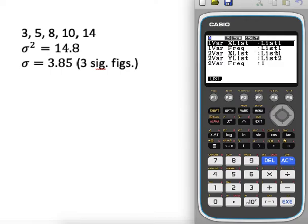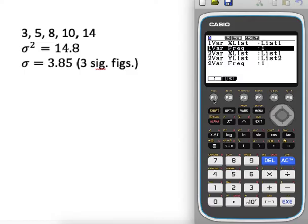My frequency is now set from a previous example to list 1, but I want my frequency to be 1.